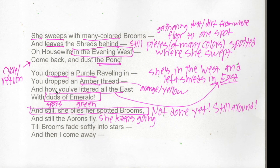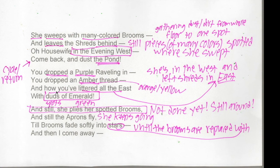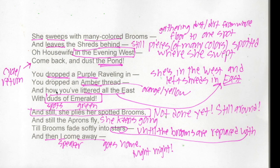And still the aprons fly — lots of movement and color still happening. Till the brooms fade softly into stars — I'm going to connect the stars with the evening, and that sounds familiar given what I drew with the emerald. Then I — so there's the speaker. We're in first person, which tells us the 'she' at the beginning is not the same as the 'I.' The I is not the housewife. And then I come away — once all the colors fade into stars, she goes away, just like she would at night.